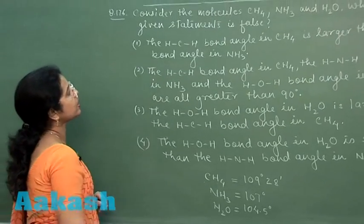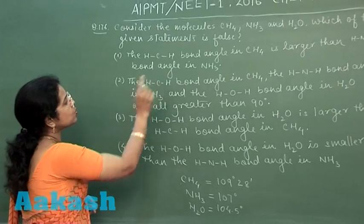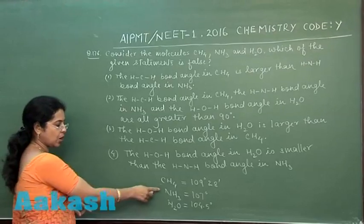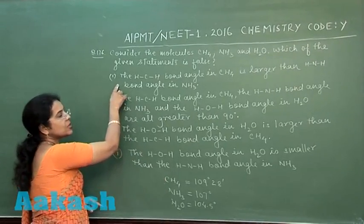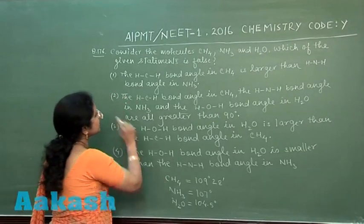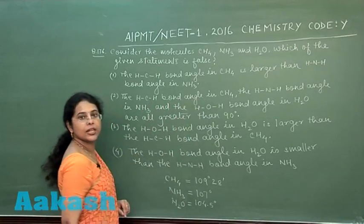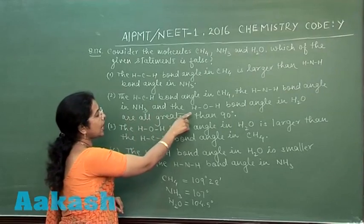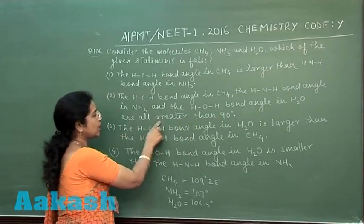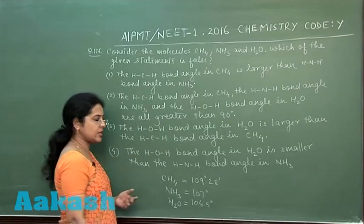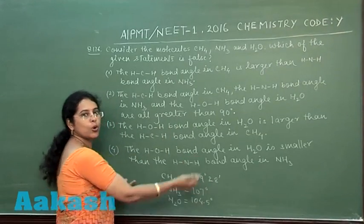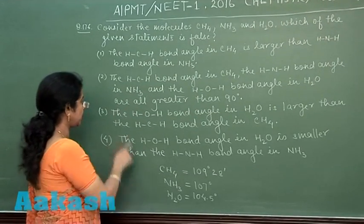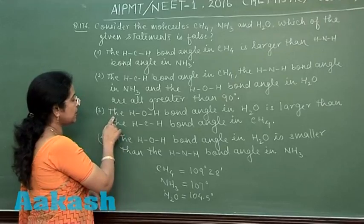Looking at the options: the first statement — the HCH bond angle in methane is larger than the HNH bond angle in ammonia — is true. The second statement says the HCH bond angle in methane, the HNH bond angle in ammonia, and the HOH bond angle in water are all greater than 90 degrees. Since all bond angles are indeed greater than 90 degrees, this option is also correct.